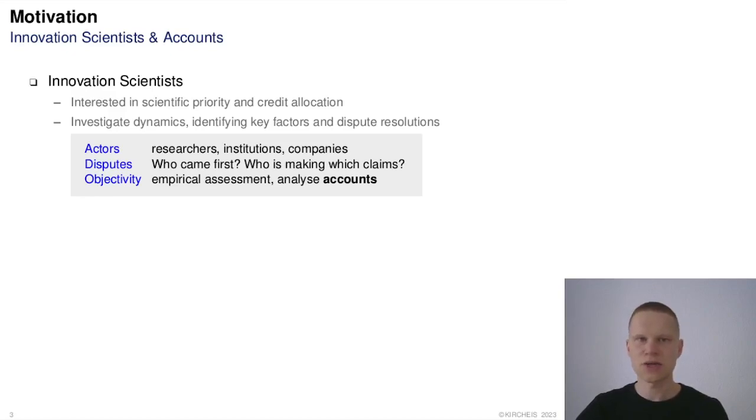Innovation scientists are interested in scientific priority disputes and how research credit is allocated. They look into the dynamics to identify key factors and dispute resolutions. They want to find out which researchers, institutions and companies are involved, who came first, who is making what kind of claims, and they want to assess and analyze accounts.